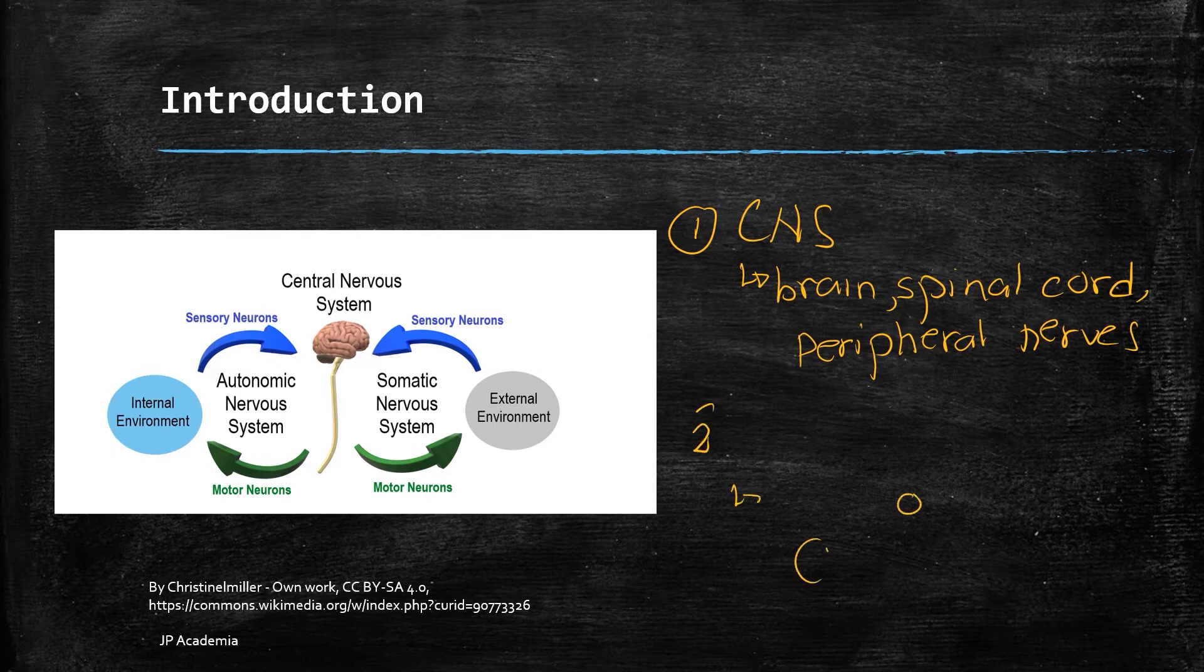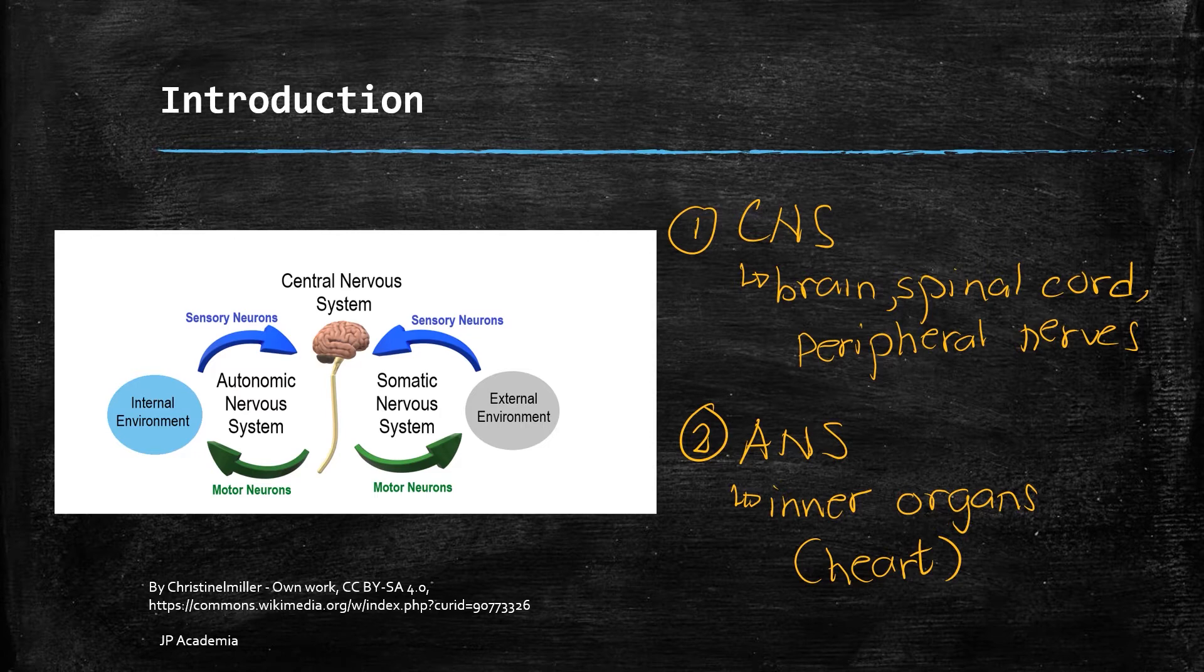While the ANS or the autonomic nervous system controls and maintains the functionalities of the inner organs, including the heart and the intestines. It can be seen in the figure that the basic unit of the nervous system is the neuron that allows the transfer and reception of electrical pulses that mainly manages the information transfer.